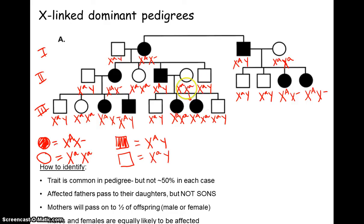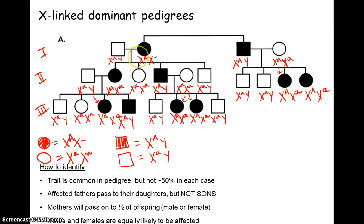Same logic over here — mama only has X little a, so both daughters must also be X big A, X little a. On another branch, the daughter has the trait and dad only has little a to give, so she's big A, little a. For one mother, we can figure her out by looking at the daughter. Just go through and do the ones you know first, then backtrack on any that are unclear.